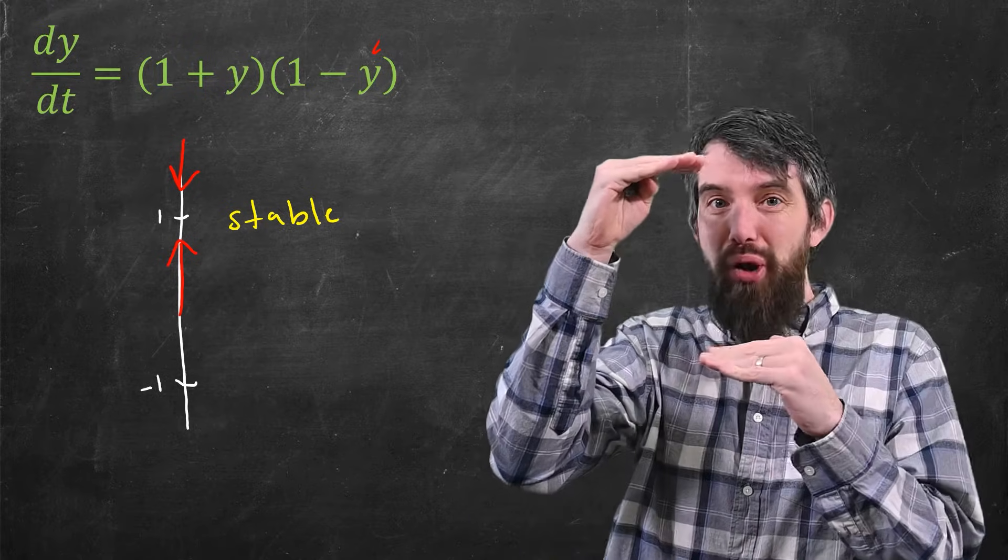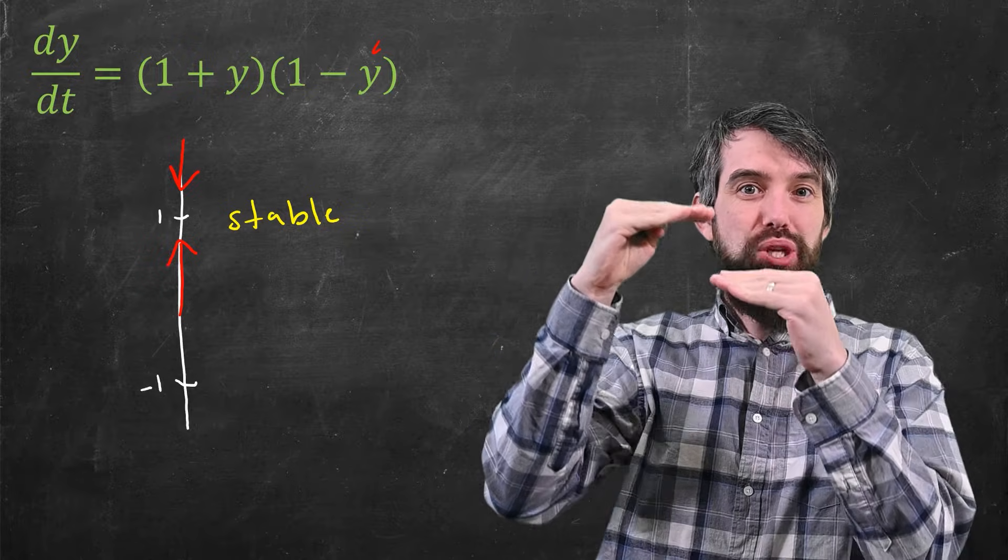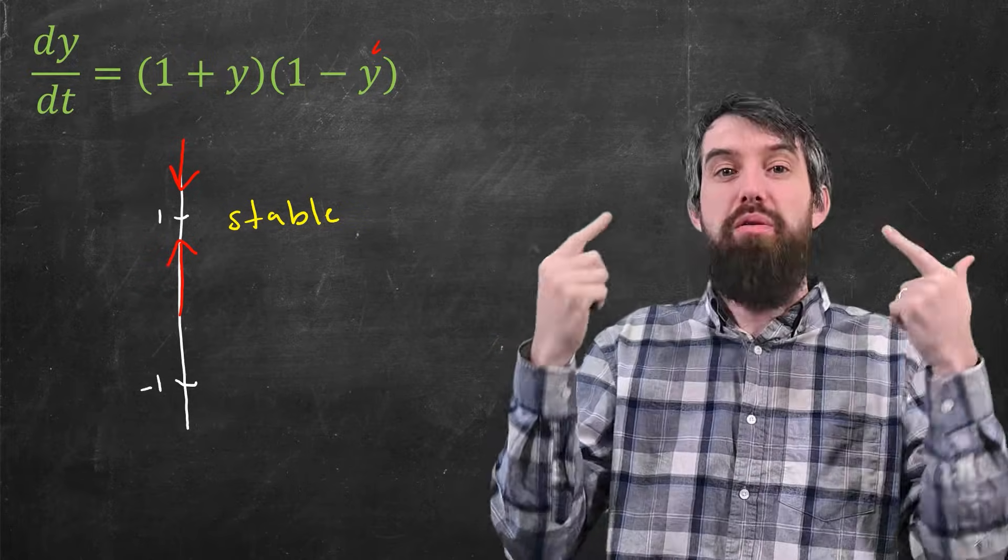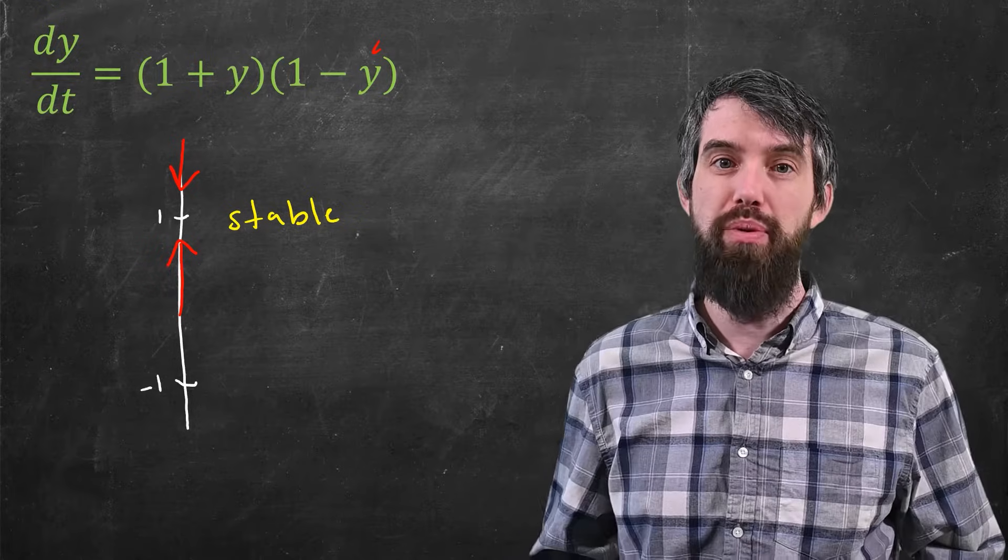And this is what lets me conclude that the point which is y equal to 1 is a stable equilibrium point. Because above and below the equilibrium point, the slopes are tending towards the equilibrium point. They're negative when you're above it and they're positive beneath it. We're just going to send them to the equilibrium point.